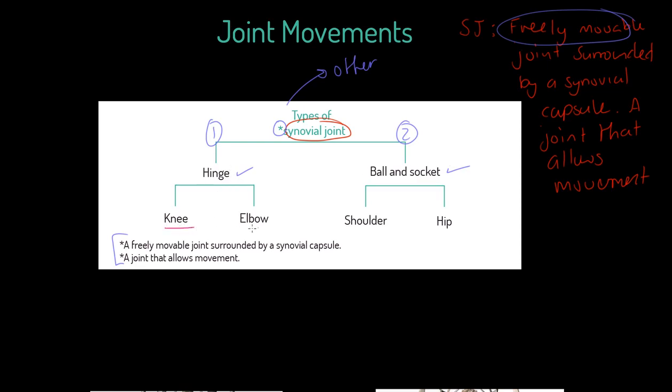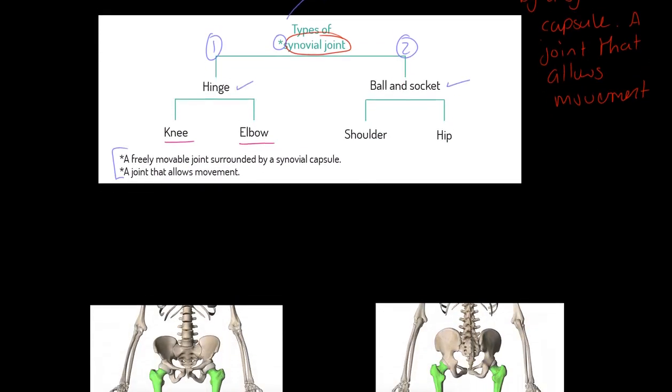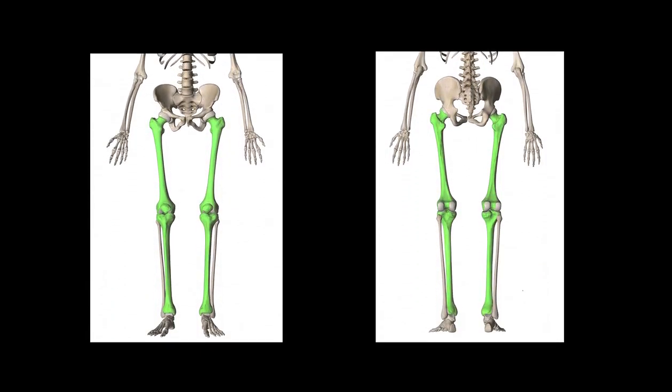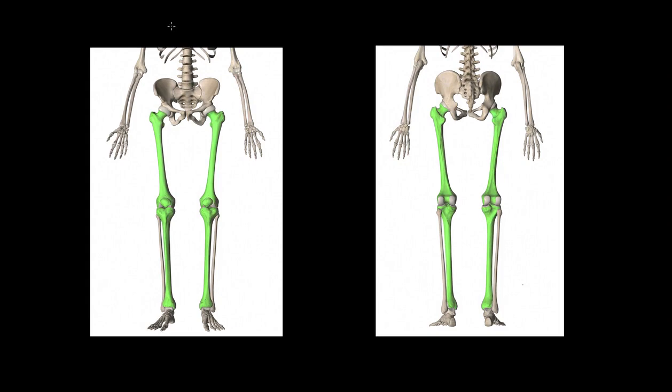Where are these joints? We're going to focus on hinge first. We have the knee and the elbow. Just for reference, there's also the ankle as a hinge, but we'll come back to that at a different level of study.